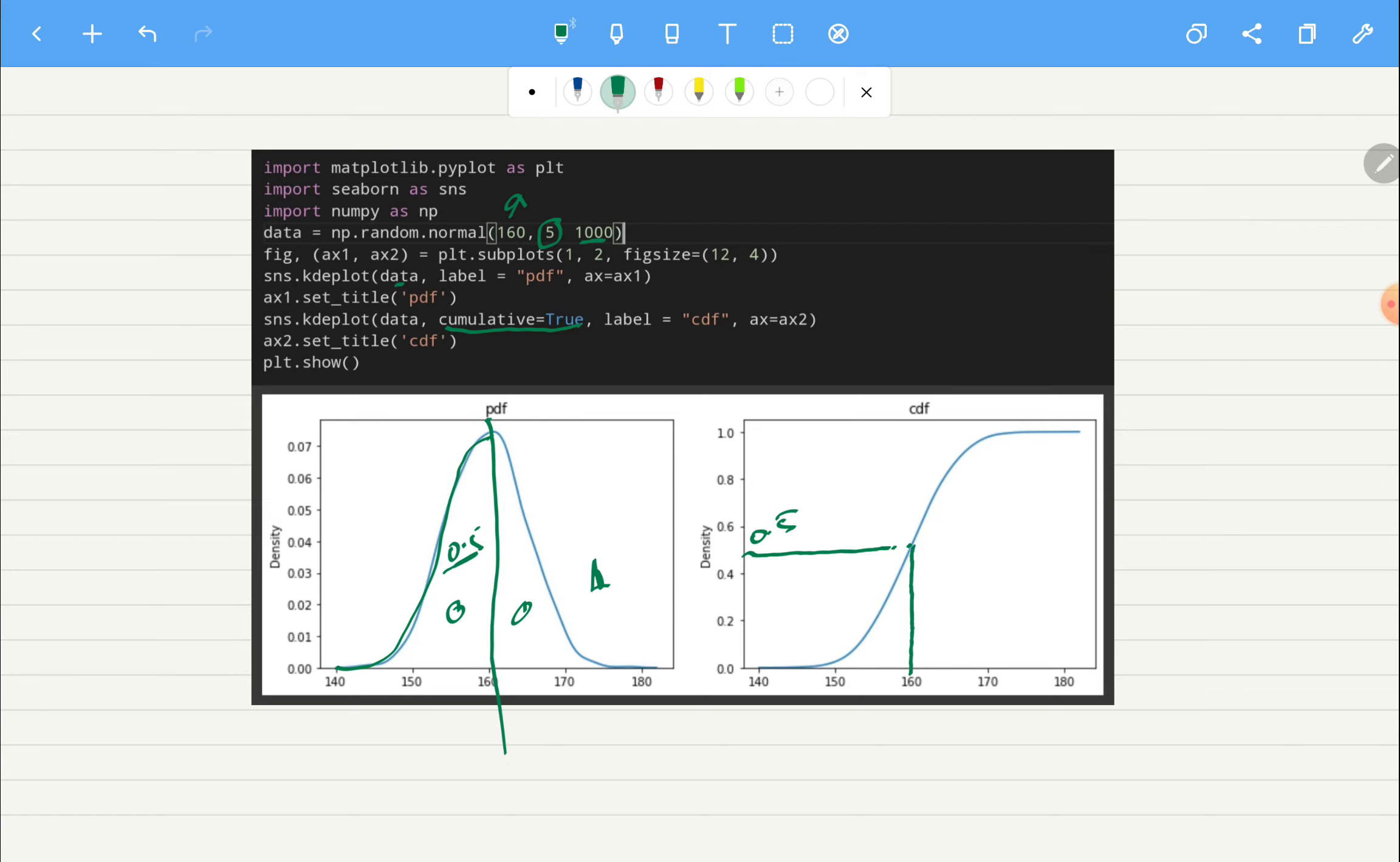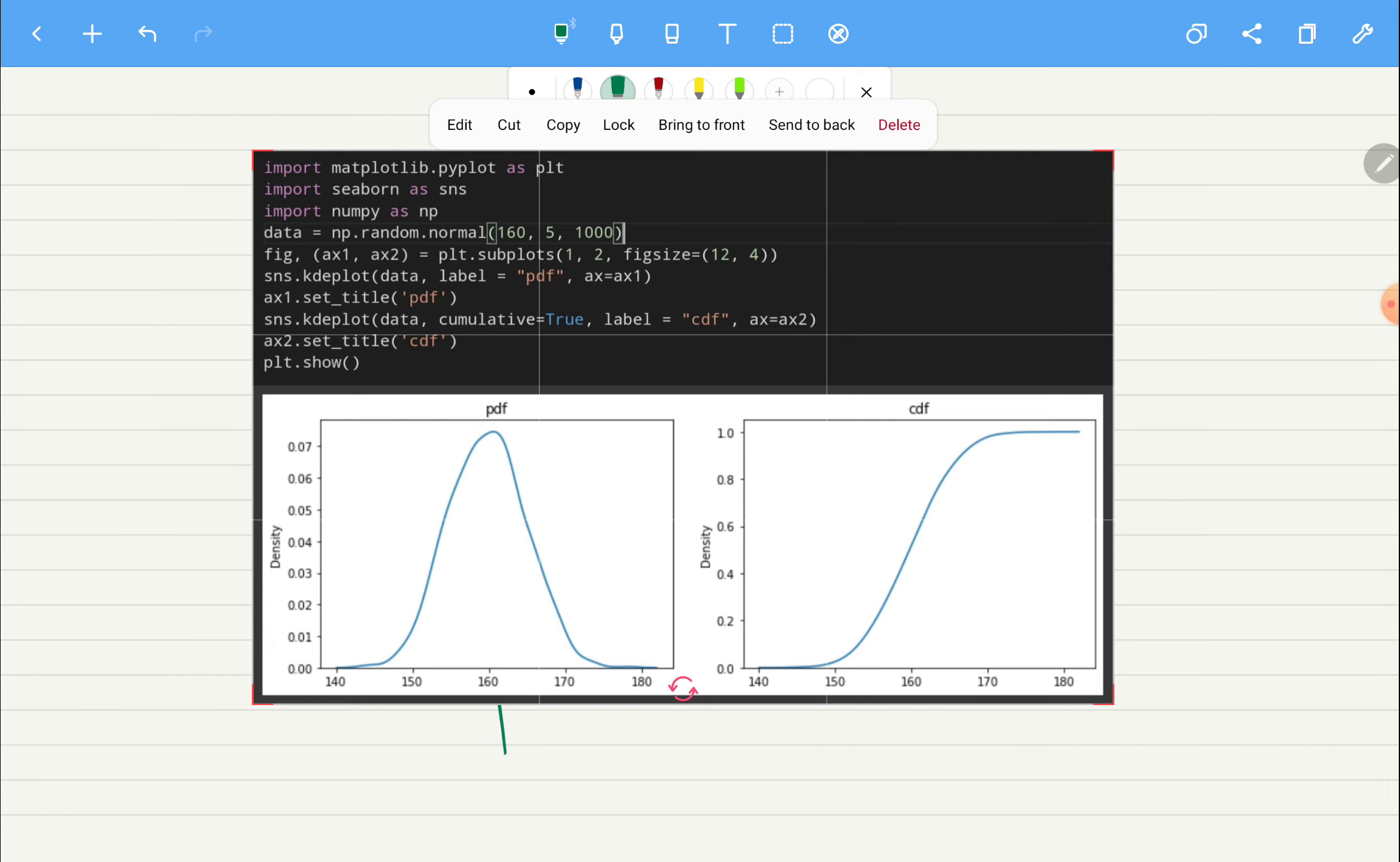Now if you want to see what will be the probability of height being less than 150, we can again take area under the curve of this one or we can just go here and take this particular point. So it looks like 0.001 or maybe something like that.